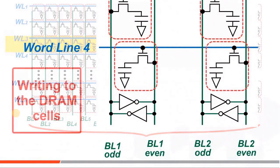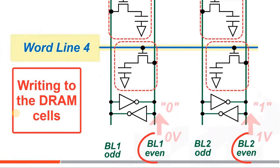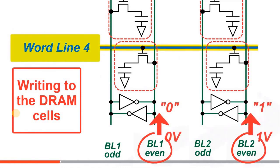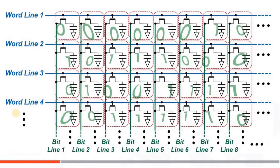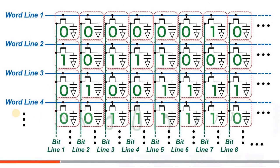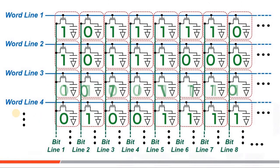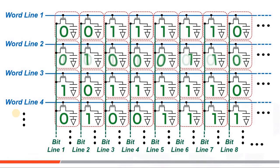For a write instruction, the targeted bit lines are driven high or low depending on whether you are writing ones or zeros, and the capacitors inside the selected memory cells are moved to those written values.